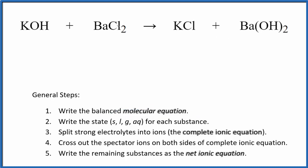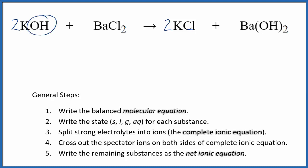I can see that I have two chlorines here and just one here, so I put a two in front of the KCl. That balances the chlorines, but now I have two potassiums, so let's put a two in front of the KOH — potassium hydroxide. Now the potassium is balanced, but we have two hydroxides. That's okay — we have two hydroxides and a barium on each side. This is the balanced molecular equation.